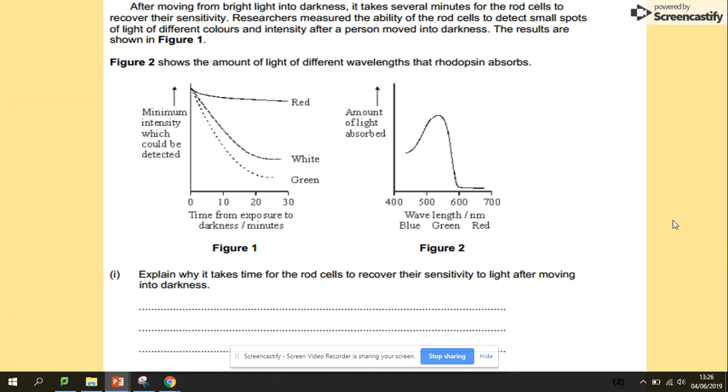Let's have a look at the questions. Explain why it takes time for the rod cells to recover their sensitivity to light after moving into darkness. What needs to happen: from the light when we see everything in color, this is when our cone cells were working.